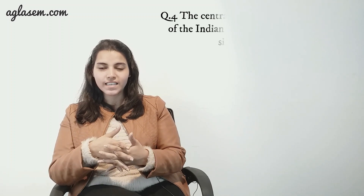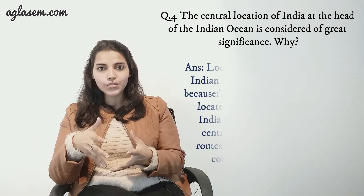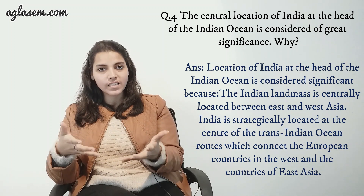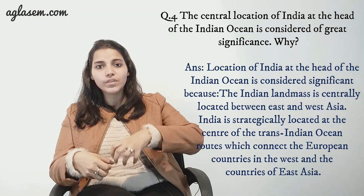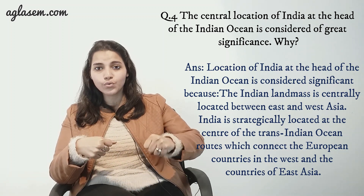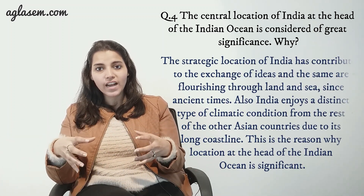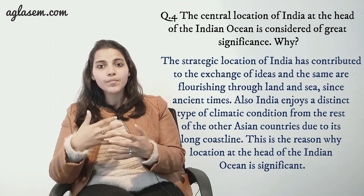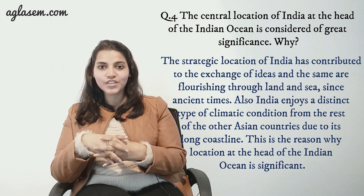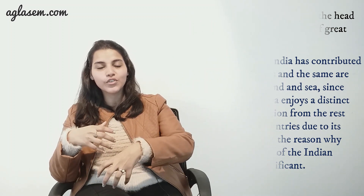Question number four: the central location of India at the head of the Indian Ocean is considered of great significance. Why? The Indian land mass is centrally located between east and west Asia. India is strategically located at the centre of the trans-Indian Ocean routes which connect the European countries in the west and the countries of east Asia. India's strategic location has contributed to the exchange of ideas flourishing through land and sea since ancient times. Also, India enjoys a distinct type of climatic condition from the rest of the Asian countries due to its long coastline. This is why its location at the head of the Indian Ocean is significant.